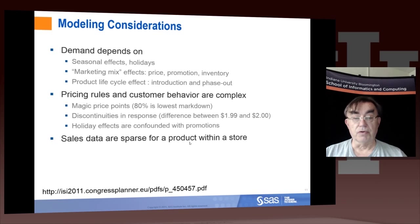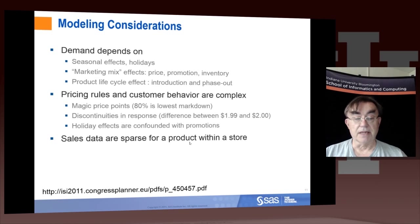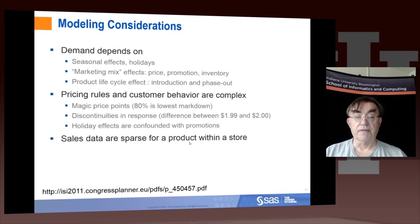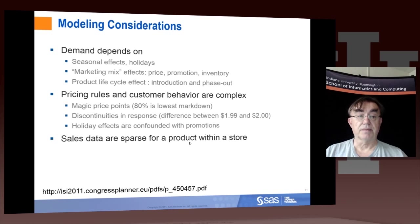There are rules of thumb, such as 80% being the lowest possible markdown. There are also psychological factors — $1.99 feels much less than $2.00 in people's minds. You also have to disentangle various competing effects. And within any one store, the sales data are pretty sparse, so you can't make very good predictions based on that alone.